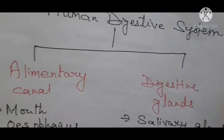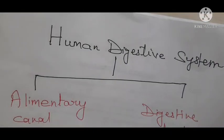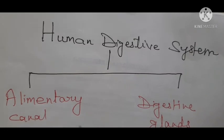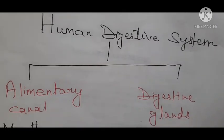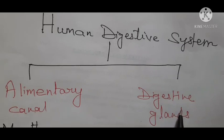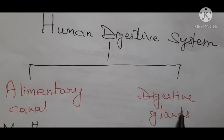The digestive system consists of two parts: the alimentary canal and digestive glands. The alimentary canal is a long, coiled, muscular and tubular passage which extends from the mouth to the anus.